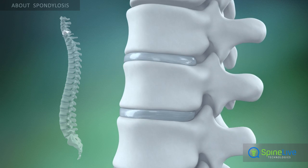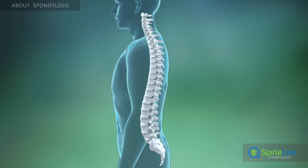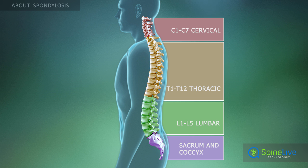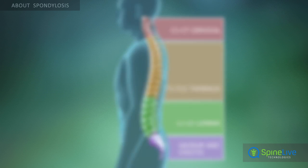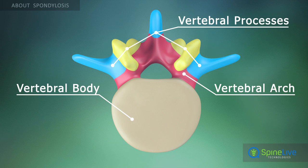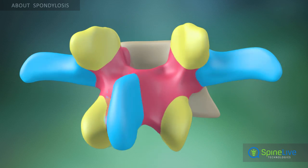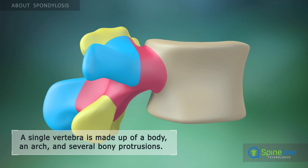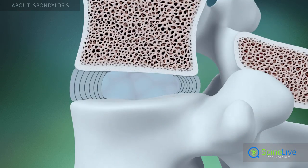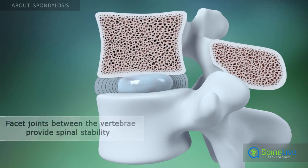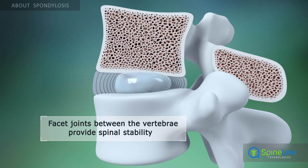The spine is divided into four sections — cervical, thoracic, lumbar, and sacrum and coccyx. A typical vertebra consists of a vertebral body and a vertebral arch, which has processes for articular and muscular attachment. An intervertebral disc is located between vertebral bodies and protects vertebrae and the spinal cord from the impact of activity.